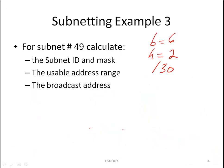Now in this question, for the subnet that we have just subnetted, we are being asked to calculate for subnet number 49. We're asked for the subnet ID and the mask, the usable address range, and broadcast address. Just a little note here that the subnet ID is also the network ID, also known as the network address.